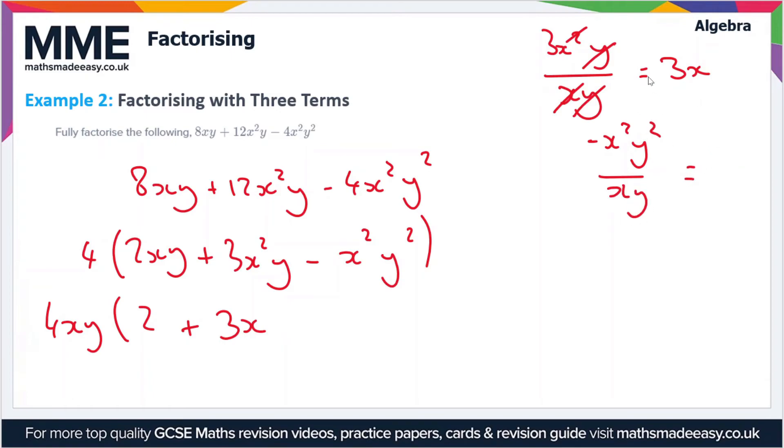We're going to be left with, well each of the terms will cancel once. So we're left with minus xy. So this is our fully factorized bracket now. Because there are no common terms or common factors of 2, 3x and minus xy. So this is now in the simplest form.